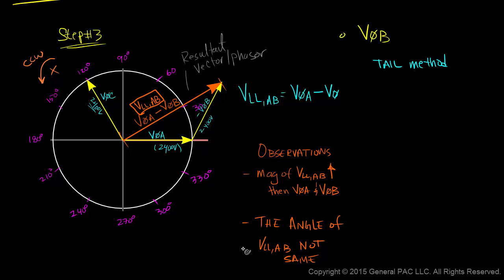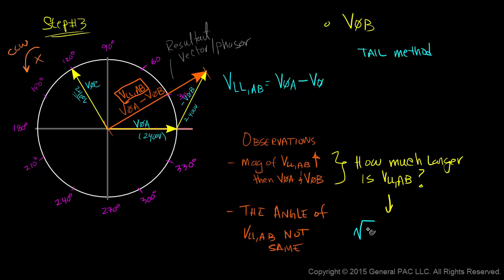So here's a question. How much larger in terms of magnitude is VLLAB compared to the magnitude of V phase A or the magnitude of V phase B? And those of us who answered, well it's root 3 times larger or 173% larger and that my friends would be correct.